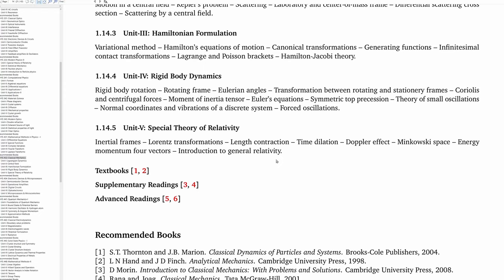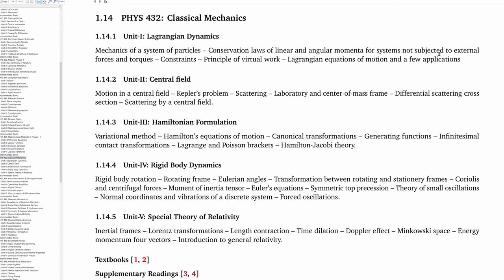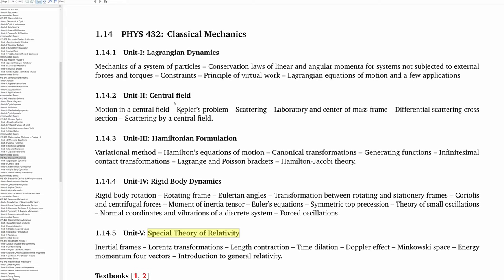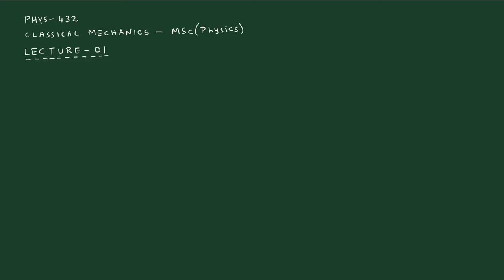What you will do in units 1 through 4 is mainly the mathematical formulation of mechanics. The titles will look very similar to BSc courses, but you must understand the subject matter is not repeating. For example, the Kepler's problem appears in higher secondary school, BSc, and now MSc — but the treatment at each level is different, and students should not assume it is repetition.